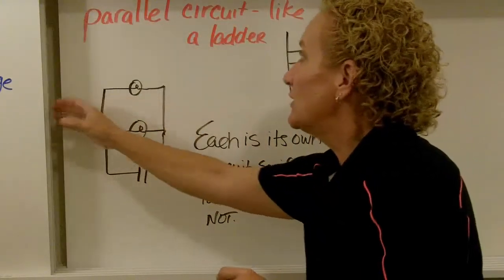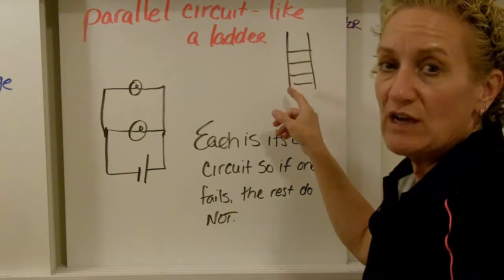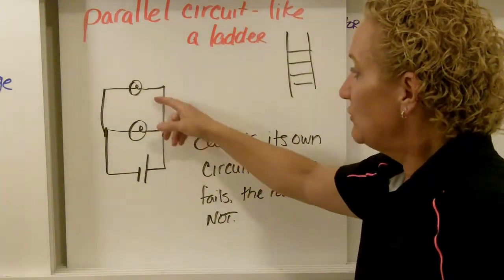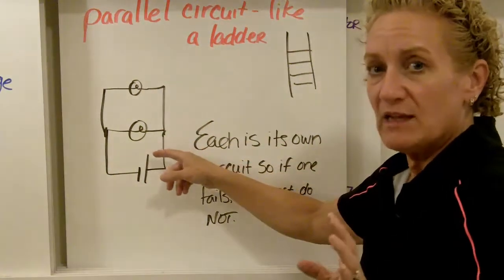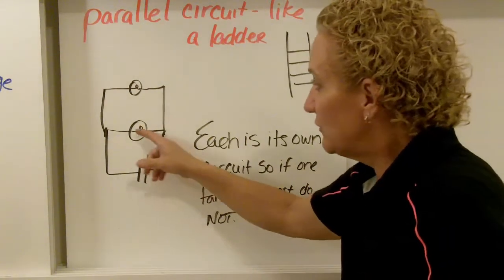Parallel, however, looks a little bit different. It looks like a ladder. See the rungs on a ladder? Or a train track. That's what parallel looks like. So here's the same thing, two light bulbs and a battery, only now it's in parallel.